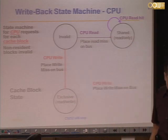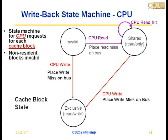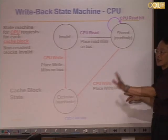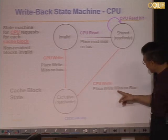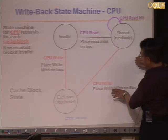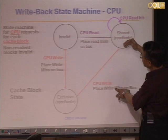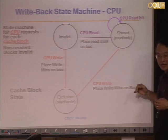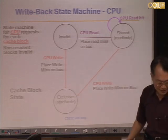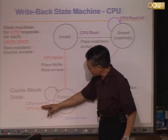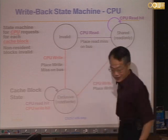For a shared block, if you want to write to it, you have to tell the others that they cannot use it anymore — so you still put the write miss on the bus for the same purpose using the existing line. Although the signal should have been something else, since this signal can achieve the same purpose, why not use it? For an exclusive line, whether that's a subsequent read hit or write hit, it stays in the exclusive state.